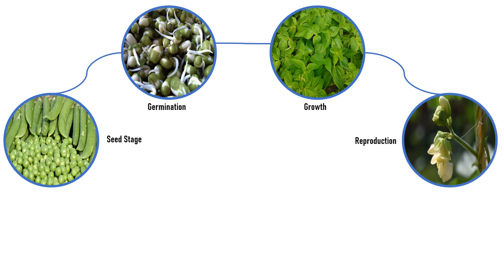Once the plant attains maturity, it can produce another offspring, and that particular condition is called reproduction. The flower is the sexually reproductive part of the plant. The petals of the flower are often very noticeable, brightly colored and strongly scented to attract pollinators. This is a very exciting stage of the plant life cycle. The female part of the flower is called the pistil and it has four parts: the stigma, the style, the ovary, and ovules.